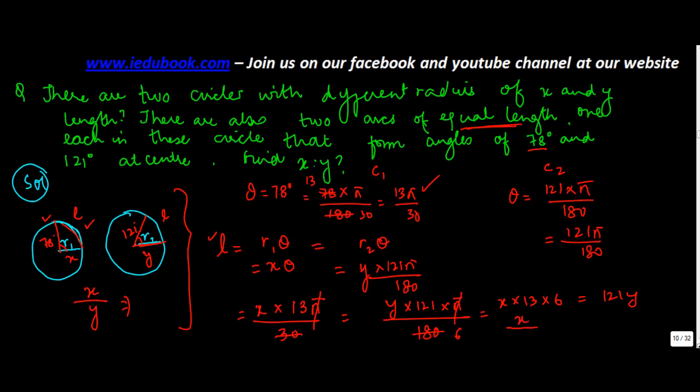Or x upon y, because you need to find out the ratio of x is to y. X upon y is equal to 121 upon 78. So that's the ratio that you were looking for.